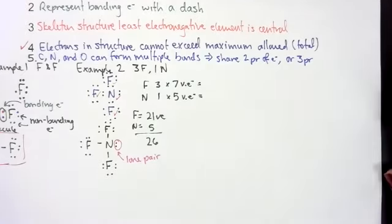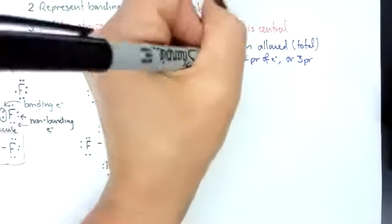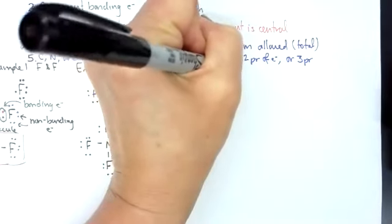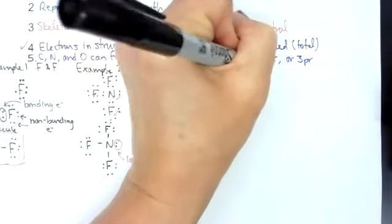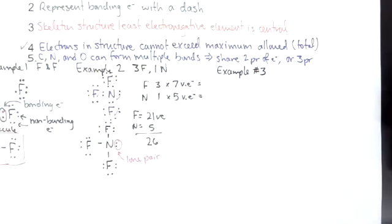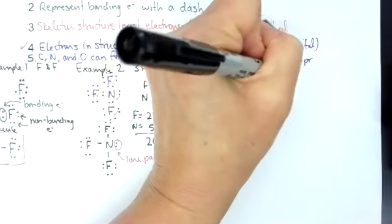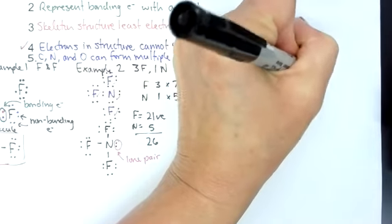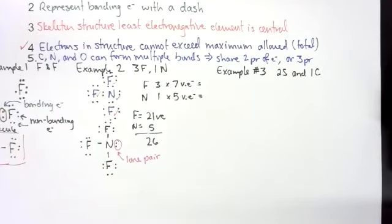So we are doing part two of 602. We just left off with the fifth rule, that carbon, nitrogen, and oxygen can form multiple bonds. They can share two pairs of electrons or three pairs of electrons. So we're going to go with example three. What if we wanted to look at a covalent bond between two sulfur atoms and one carbon?